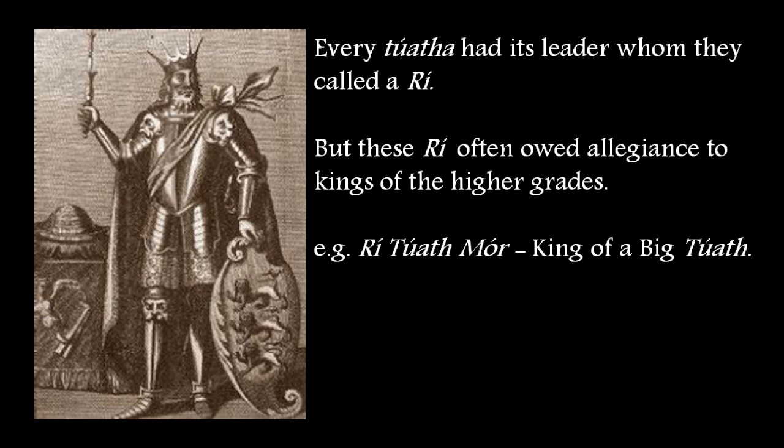This was where a number of smaller tuaths came under the rule of one powerful chief, and he becomes the king of a confederacy — an over-king of the chieftains of the submitting tuath.